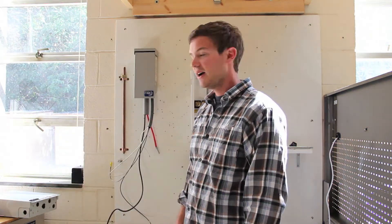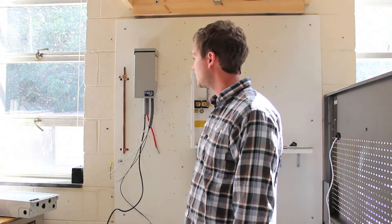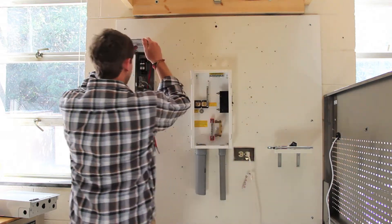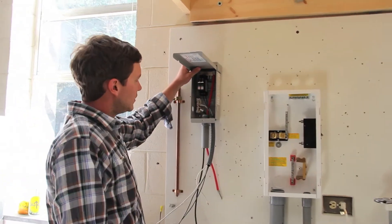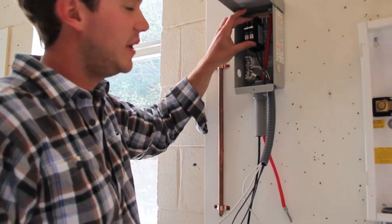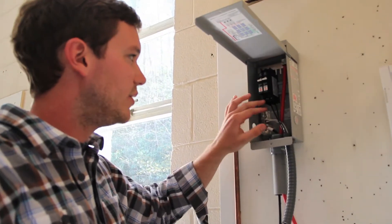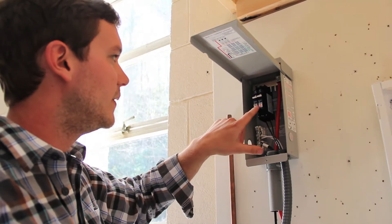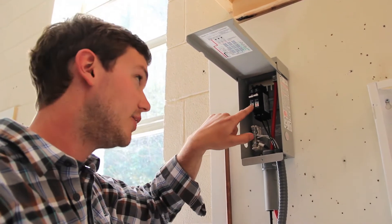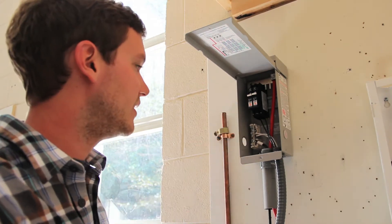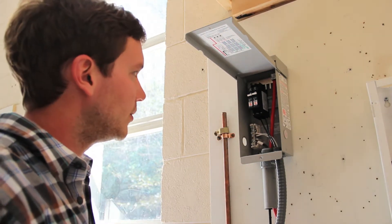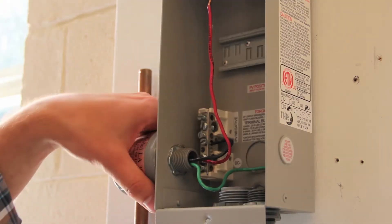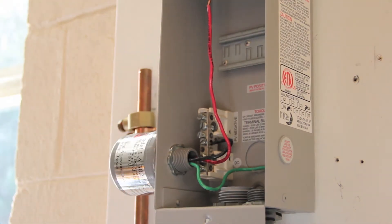For small systems and at Appalachian State, we use the Midnight Solar MN PV3 combiner box. This combiner box allows for the parallel combination of up to three strings of photovoltaic power. These breakers are rated to 150 volts, so it may not be appropriate for high voltage grid tie systems, but for lower voltage systems, a combiner box like this works great. This is our Midnight MN PV3 combiner box.